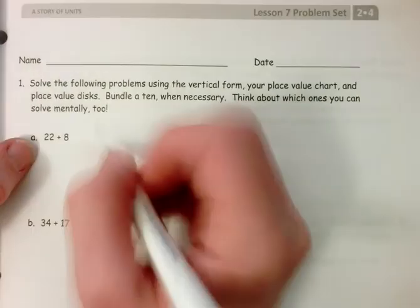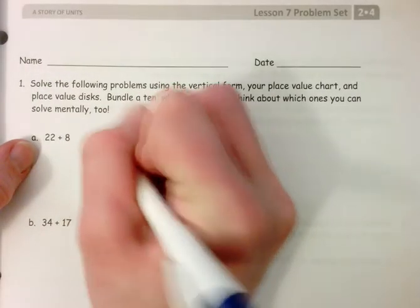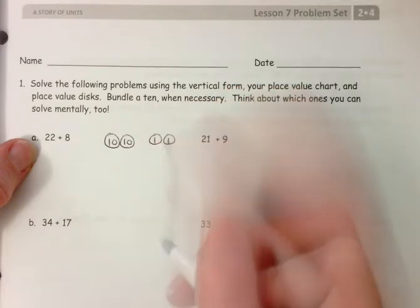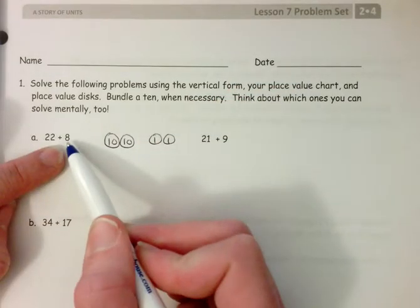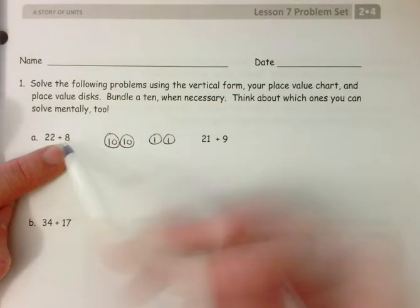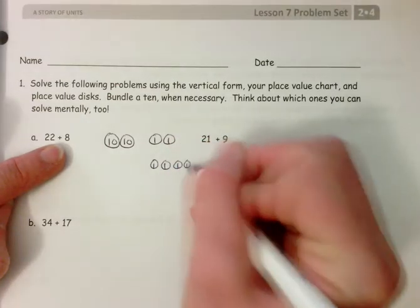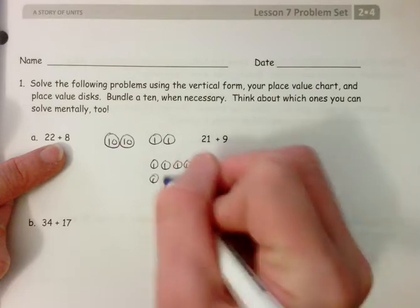So as we show our 22, we think about where we're going to line up our eights. Is it eight tens, eight ones? We're going to line them up right underneath our other set of ones.